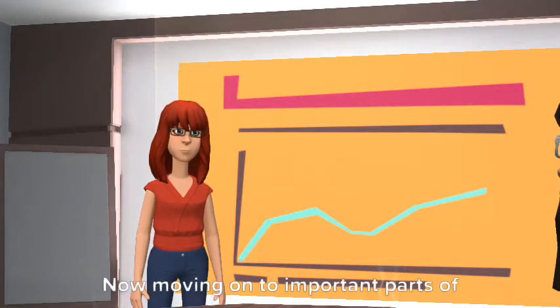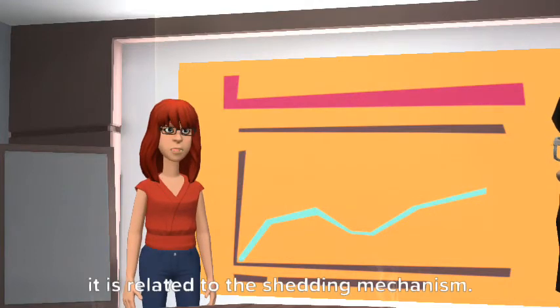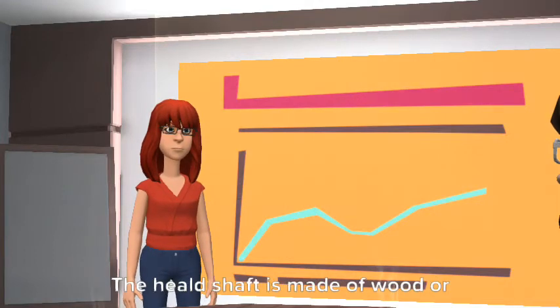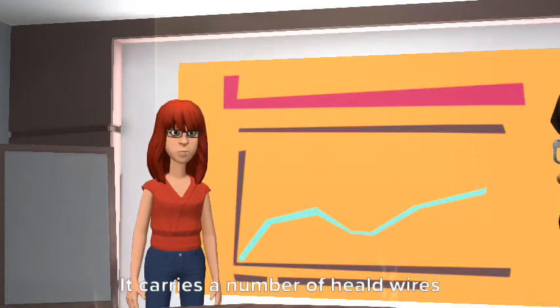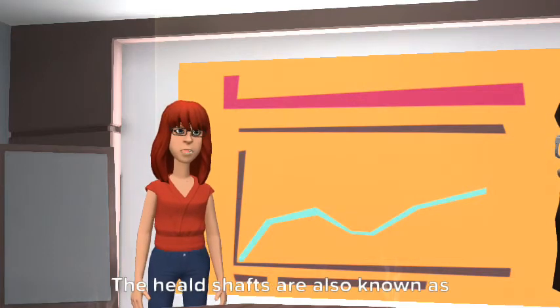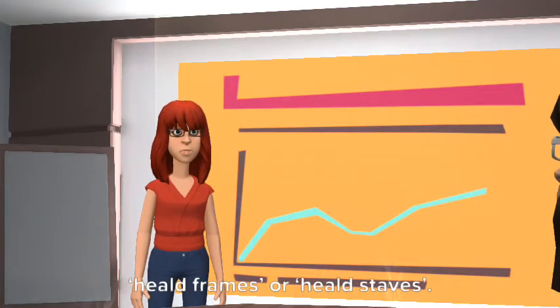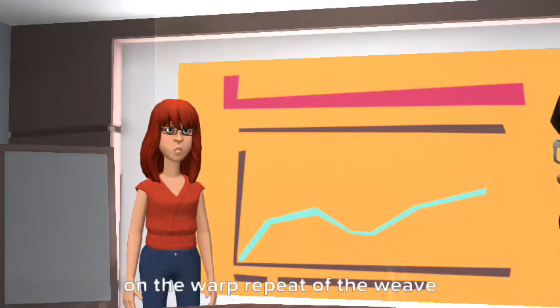Now moving on to important parts of loom. First one is heald shaft. It is related to the shedding mechanism. The heald shaft is made of wood or metal such as aluminum. It carries a number of heald wires through which the ends of the warp sheet pass. The heald shafts are also known as heald frames or heald staves. The number of heald shafts depends on the warp repeat of the weave.